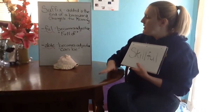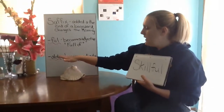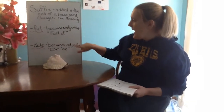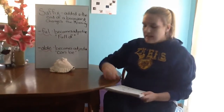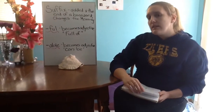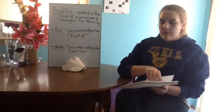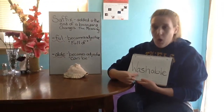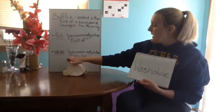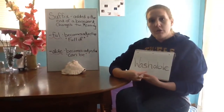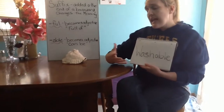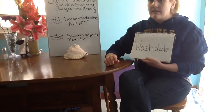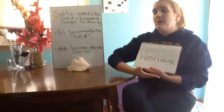So let's move on to the suffix 'able'. If you add 'able' to the end of a word, it becomes an adjective, and 'able' means 'can be'. Let's look at the word 'wash' — 'wash' is a verb. If I add 'able' to the end of it, it becomes 'washable', which means it can be washed. For example, if you see markers that say 'washable', that means if you get some on you, it can be washed off.